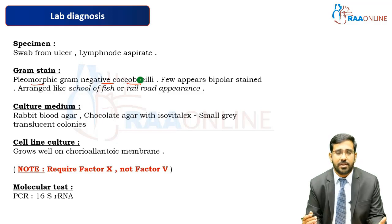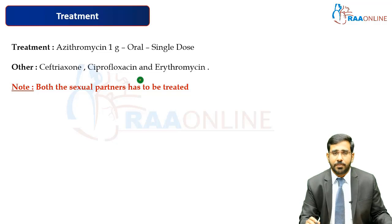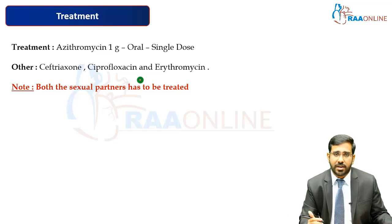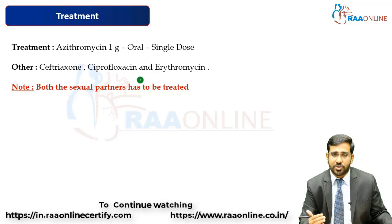For molecular diagnosis, polymerase chain reaction (PCR) can be used to detect 16S rRNA. For treatment, Haemophilus ducreyi infection is treated with azithromycin 1 gram orally as a single dose. Alternative treatments include ceftriaxone, ciprofloxacin, and erythromycin. Importantly, both sexual partners must be treated, as one partner can infect the other who may be asymptomatic or in the incubation period.